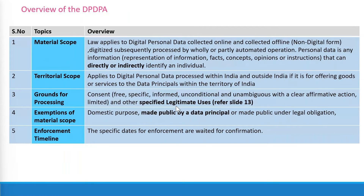Material scope we discussed clearly, and territorial scope is something important for all of us to understand. Every law in a country has a certain boundary — the boundary up to the point where the law is admissible and enforceable. The DPDP Act is enforceable within all Indian states plus union territories and up to 12 nautical miles from the Indian territory. Beyond that, you do not have the ability to enforce the law; that is where law enforcement stops.